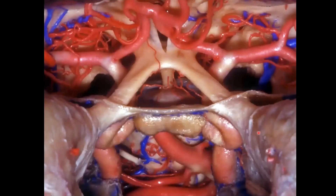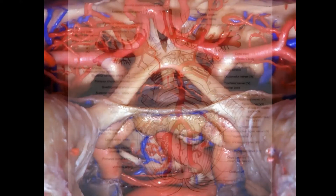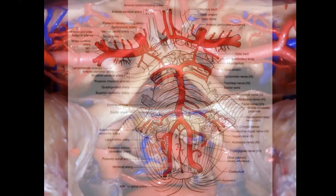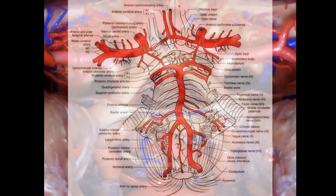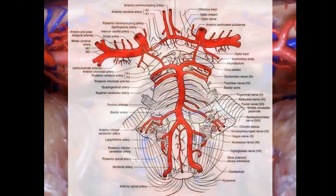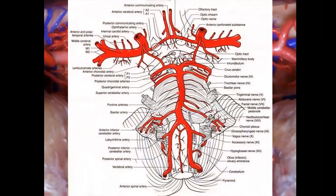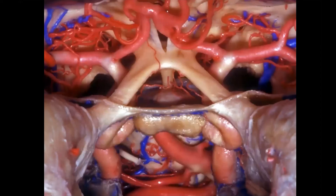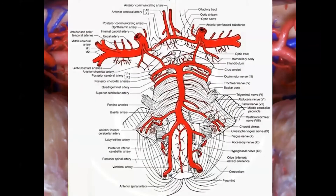This image is now in anatomical position — superior is up, inferior is down. Here's the brainstem with all bone removed, showing the posterior circulation and anterior circulation. You can see both posterior and anterior circulation clearly here.